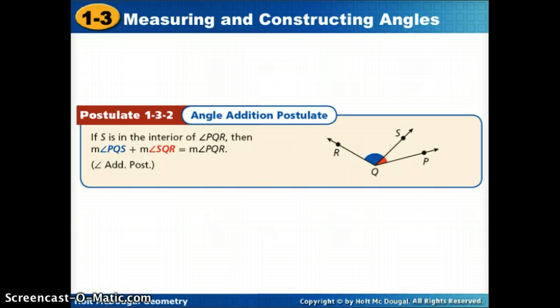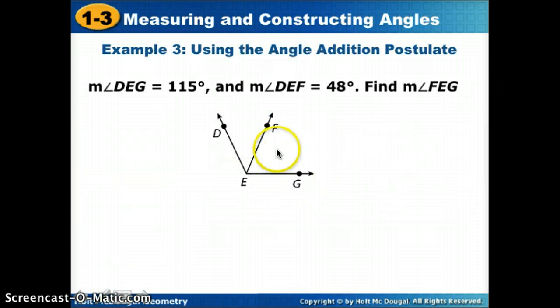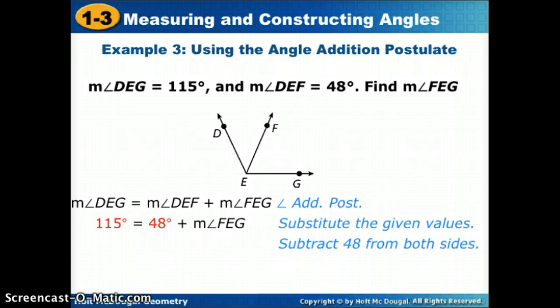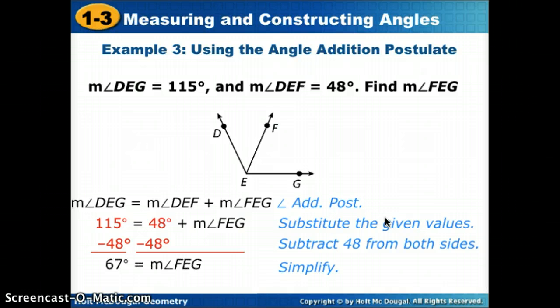Let's try a couple of examples. This example tells us that angle DEG, notice that's the whole angle, is 115 degrees. And it says DEF, one of the parts, is 48. And we're going to find FEG, the other part. With angle addition postulate, we say a whole equals a part plus a part. Substitute our measures, DEG is 115, DEF is 48, and we're looking for FEG. Subtract 48 from both sides to get angle FEG by itself. Simplify, and we see that the measure of FEG should be 67.